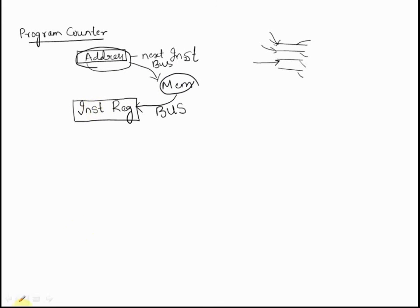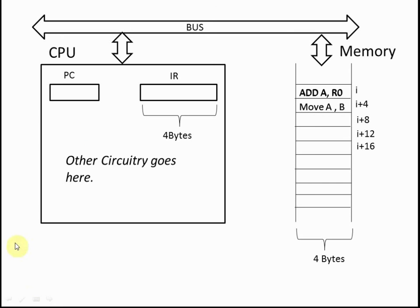Now let us see this more clearly. Here we can see a typical processor with a program counter and an instruction register. I have not included other circuitry which includes arithmetic and logical units, control units, etc. This is the system bus where data transfer takes place. It comprises of three different kinds of buses: control bus, address bus, etc.